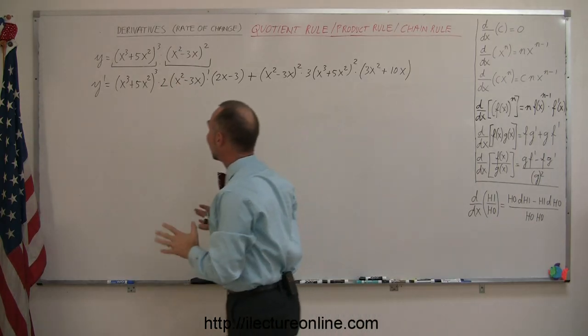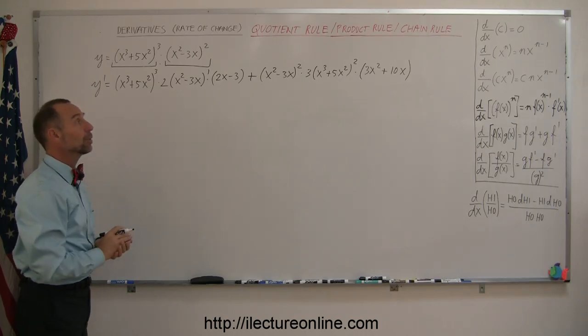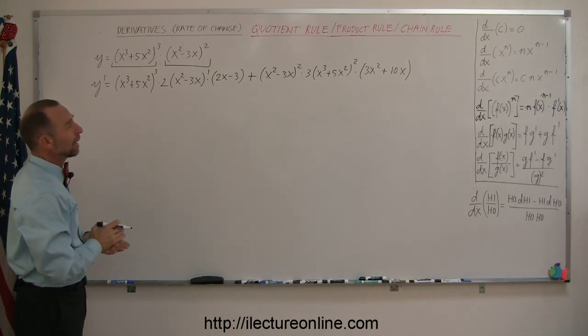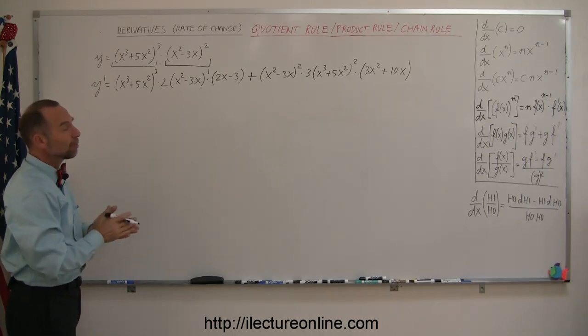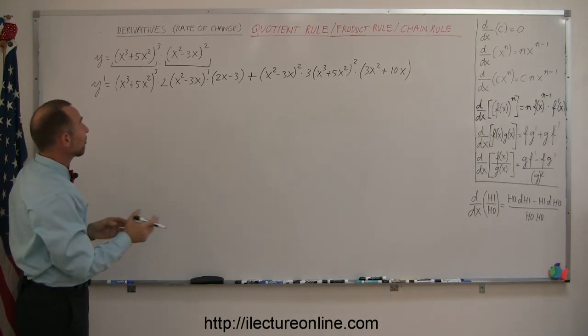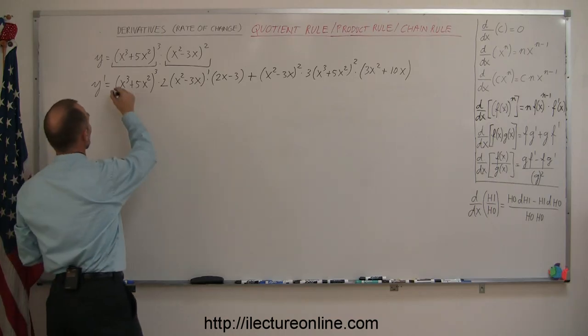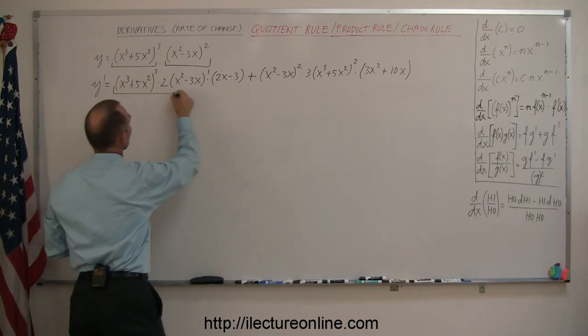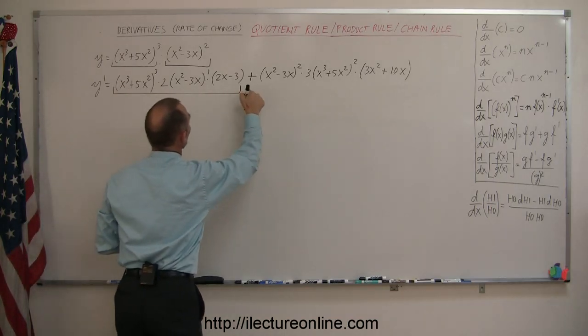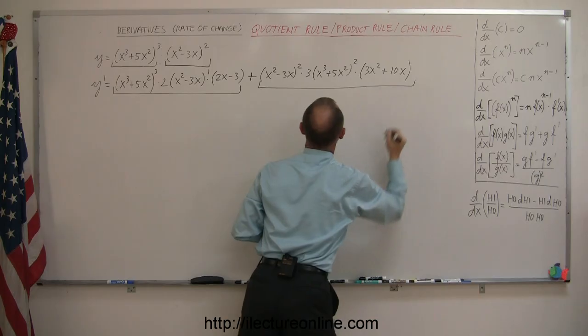So that is the derivative of that product. Now, we don't want to leave it like that — we want to try to simplify this if we can, by factoring out anything that's common. We have one term plus a second term.